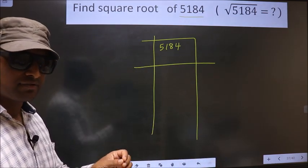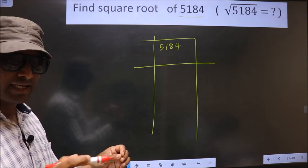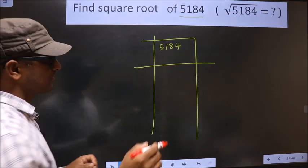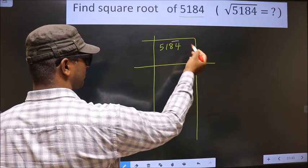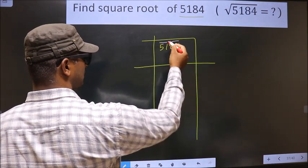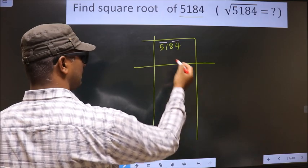Next, we should divide the given number into pairs. Starting from this side, these two numbers make one pair and these two numbers make another pair.